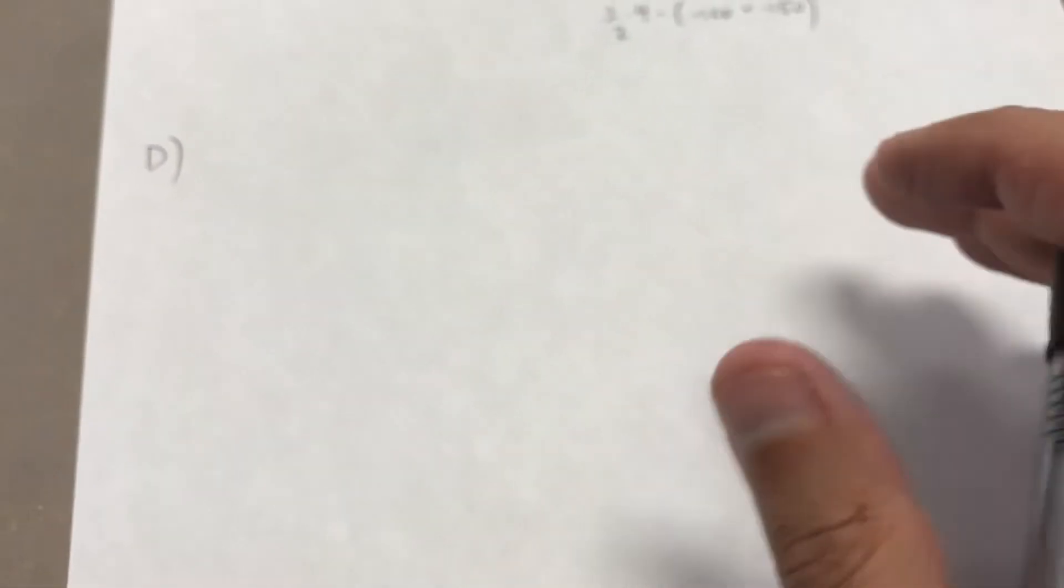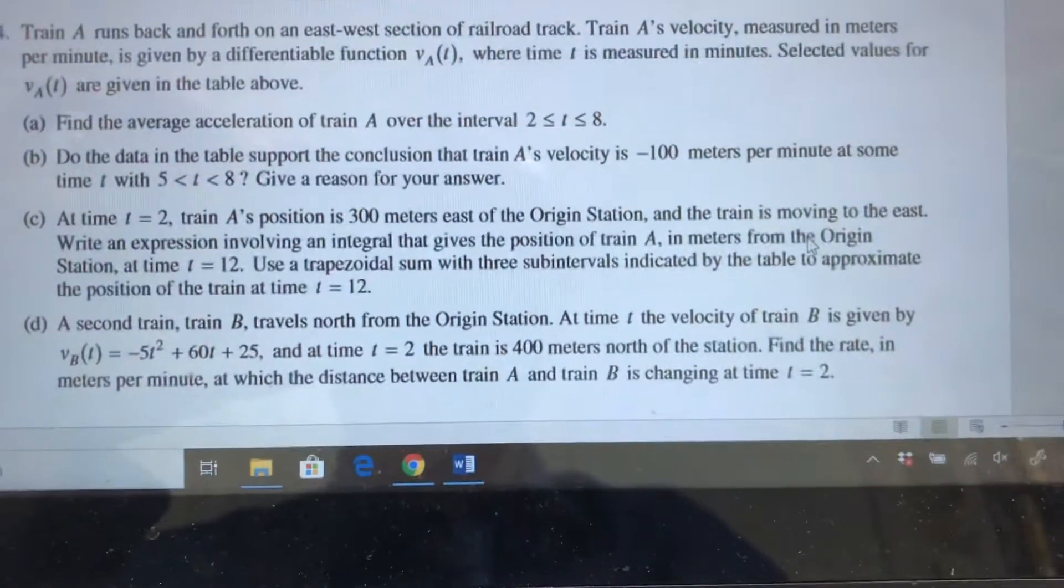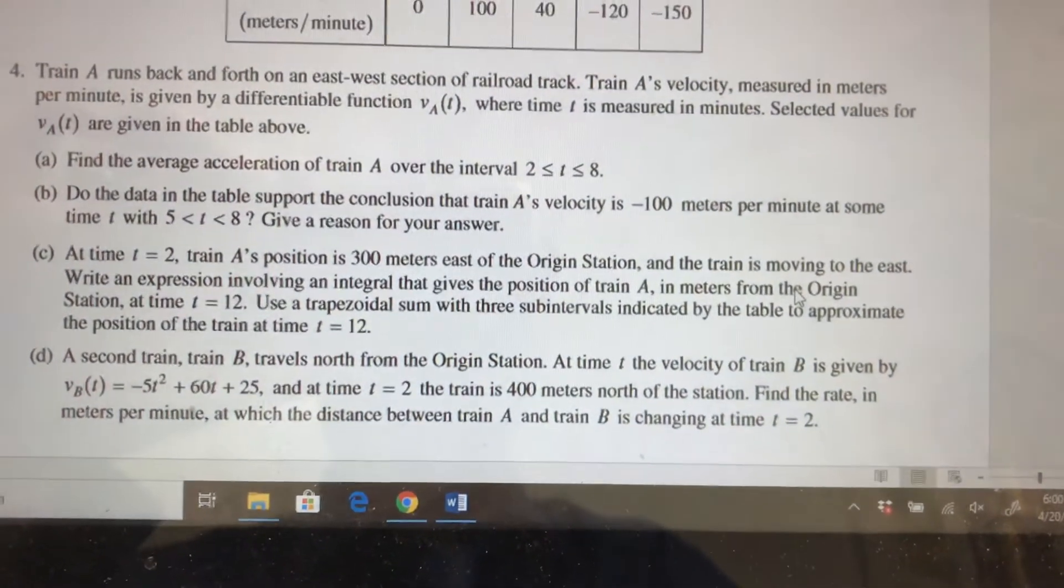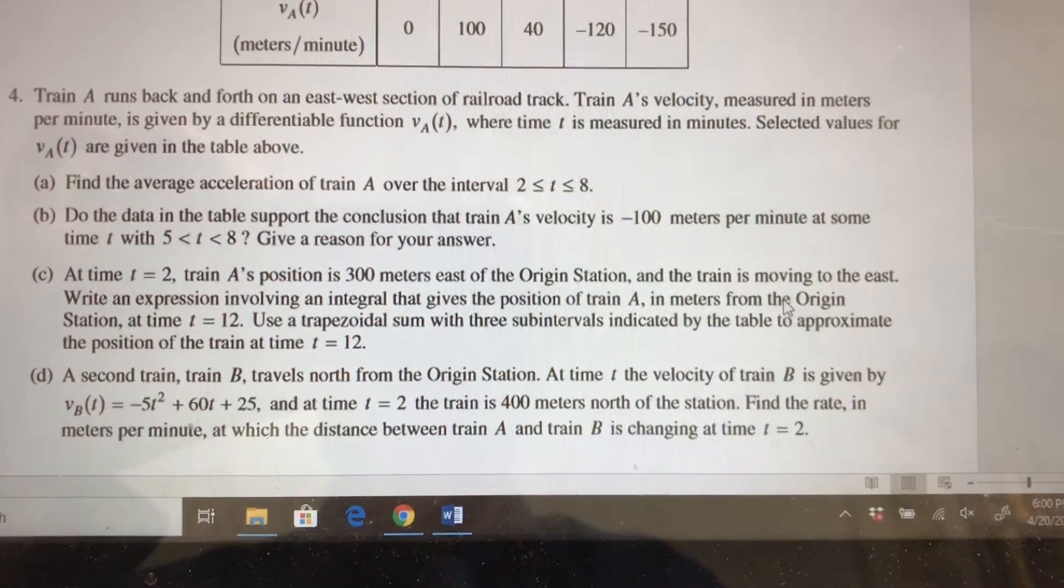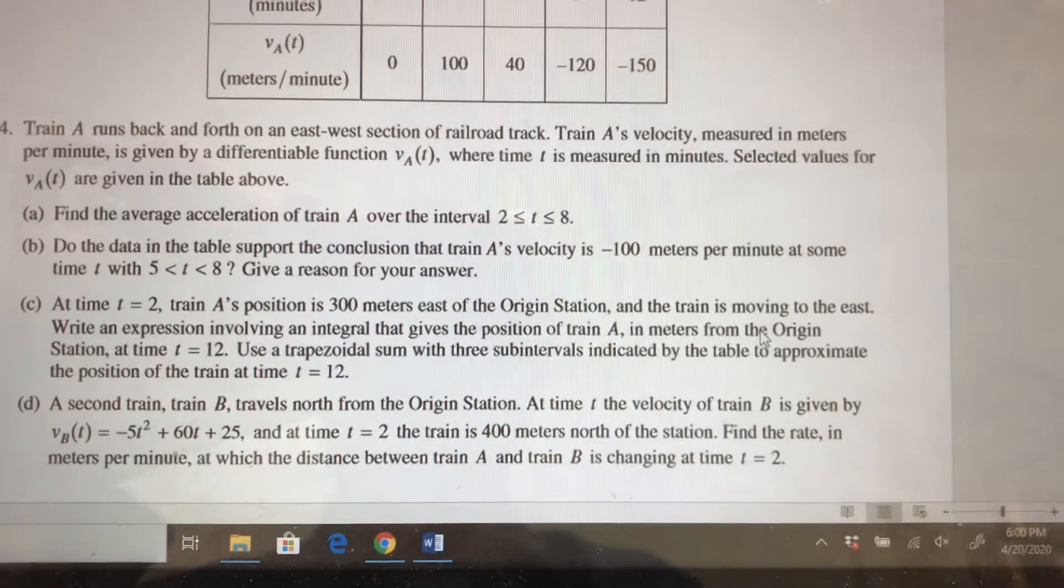Part D. Here's where things get kind of interesting. They say there's a second train that travels north. The one train was traveling east, and then they tell us the velocity function there, and they tell us that at time equals 2, it's 400 meters north of the station. We have the rate in meters per minute in which the distance between the two trains is changing.